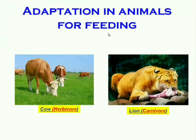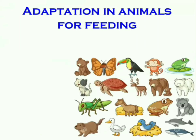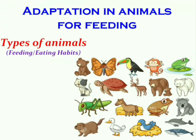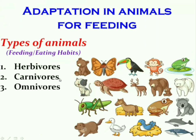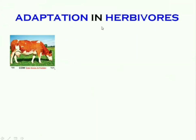Animals find their food from plants or other animals. Based upon their feeding habits, animals are grouped as herbivores, carnivores, omnivores, parasites, and scavengers. Herbivores are animals that eat only plants — 'herb' means plants — so herbivores eat only plants.